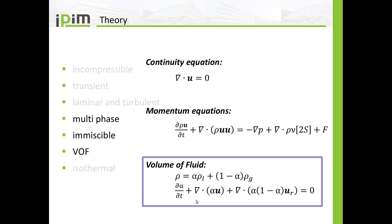If alpha is 0.5, for example, the compression term is non-zero. If you remember the tutorial on discretization schemes and transport equations, we will always have a certain numerical diffusion. This is the issue with the volume of fluid method — we introduce alpha values between zero and one, such as 0.5, but we want to avoid that because we want a sharp interface between gas and liquid. The compression term handles this: if alpha is between zero and one, the term is non-zero and it compresses the interface.